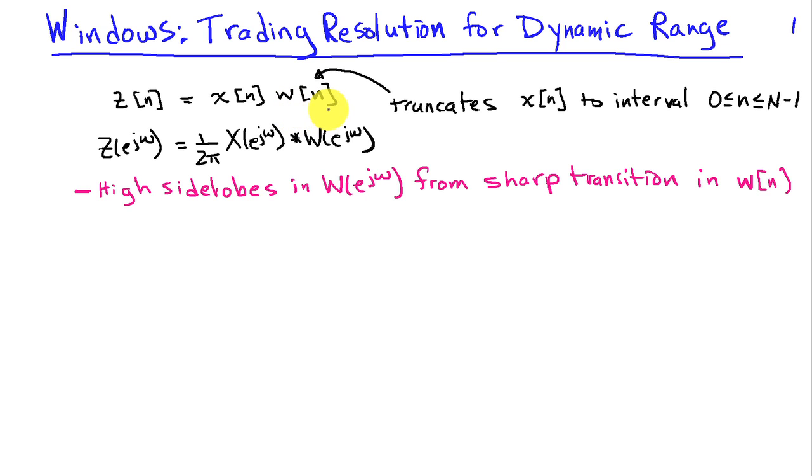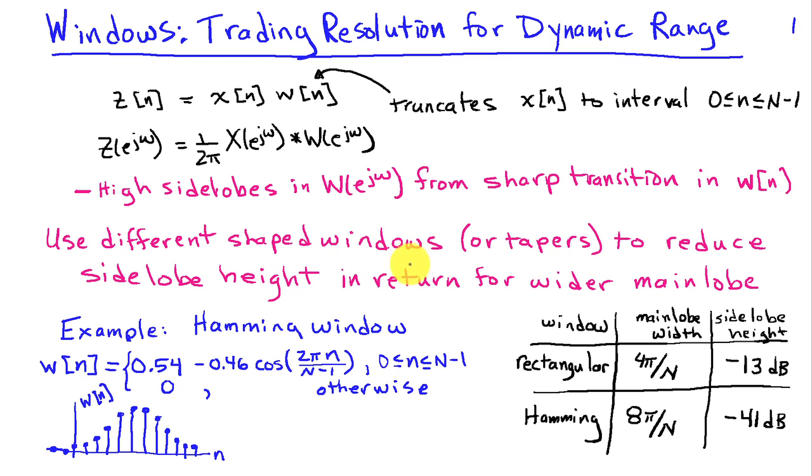So if we increase the main lobe width, we're going to lose resolution, but by lowering the side lobes, we get increased dynamic range. These windows are also sometimes called tapers. And the goal of using different windows is to reduce the side lobe height in return for a wider main lobe.